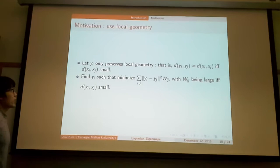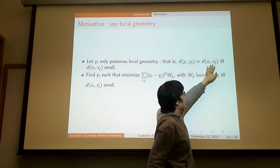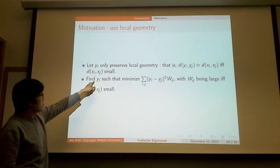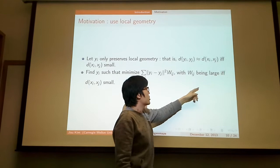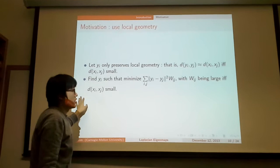What can we try? We can try letting yi only preserve local geometry. That is, the distance between yi and yj approximates the distance between xi and xj if and only if the distance between xi and xj is small. We can do it by this way: find yi that minimizes this term with wij being large if and only if the distance between xi and xj is small. That is the basic motivation of Laplacian eigenmaps.